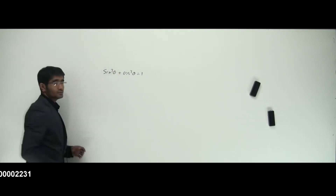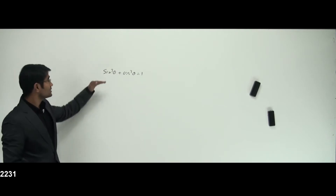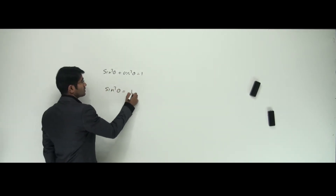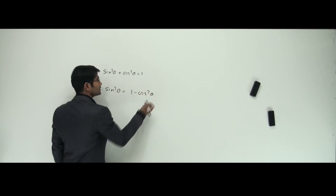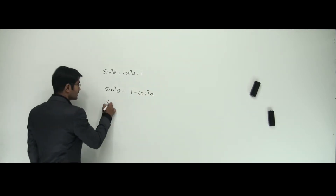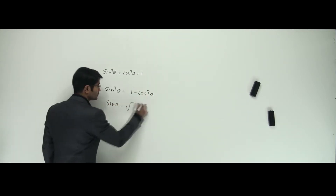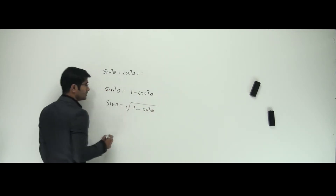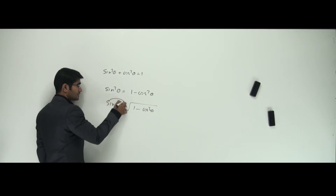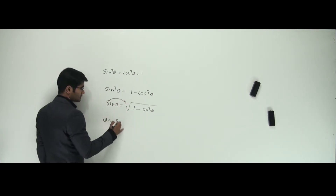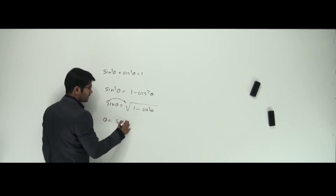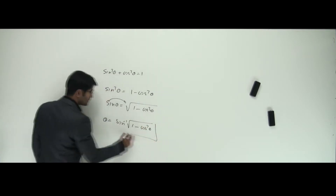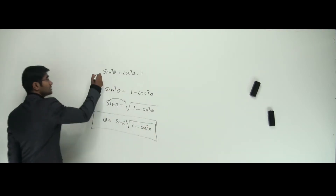This is the first formula. Can I separate sine theta from this? I can write sine squared theta as one minus cos squared theta. So can I write sine theta as root of one minus cos squared theta? Yes, I can. Now, can I send sine to the other side? Theta becomes sine inverse of root of one minus cos squared theta. This is something which I got from this identity.